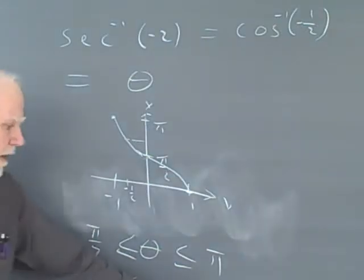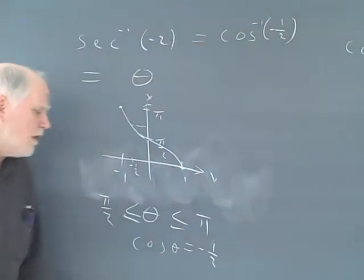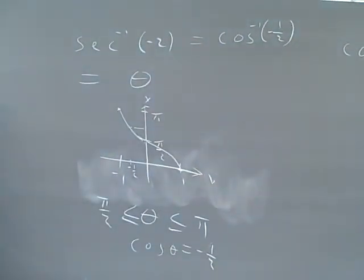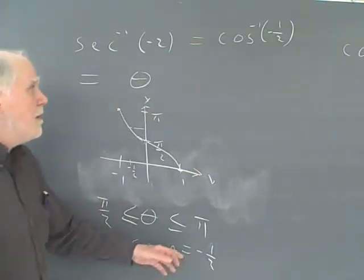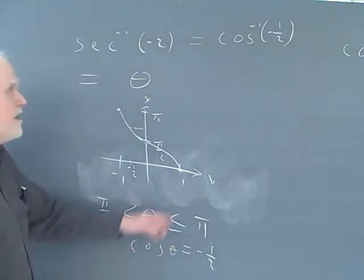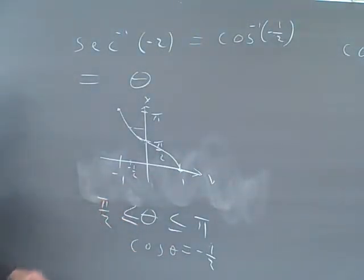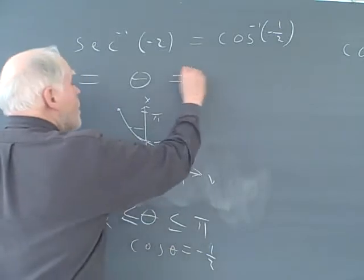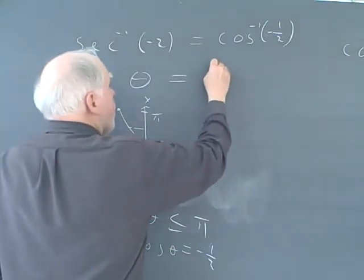Well, if you take the absolute value, if you look at 1 half, you know the common angle that gives us that is pi over 3. The cosine of pi over 3 is 1 half. So it's going to be a pi over 3 reference angle, but it's in the second quadrant. So I go over here and say, well, this equals 2 pi over 3.